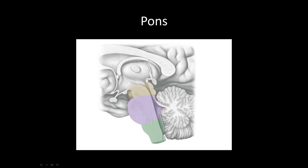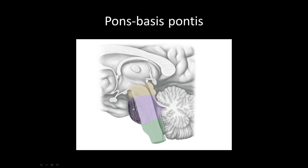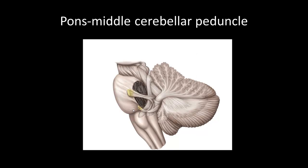Next we have the pons, highlighted in purple, which has the fourth ventricle in it — coming through the cerebral aqueduct into the fourth ventricle. We have the basis pontis, which is the anterior projection jutting out in the front of the pons. Next, the middle cerebellar peduncle is a structure connecting the pons to the cerebellum, cut away here so you can see the section.